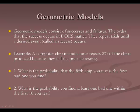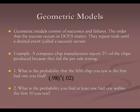A computer chip manufacturer rejects 2% of their chips because they fail pre-sale testing. Question 1 asks us to find the probability that the fifth chip is the first bad one we find. That means we had four good ones and then a bad one. The probability of being good is 0.98, so we do 0.98 to the fourth times 0.02, which gives 0.018, or a 1.8% chance.